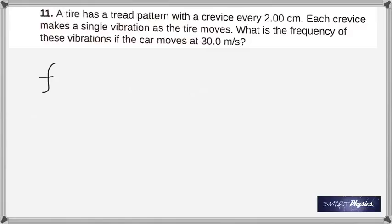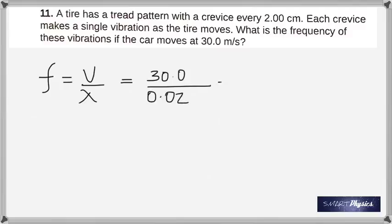That brings us to the second question. A tire has a tread pattern with a crevice every two centimeters and it makes a single vibration as the tire moves. What is the frequency of these vibrations if the car moves at 30 meters per second? Frequency is given by velocity divided by wavelength. The velocity is 30 meters per second and two centimeters is 0.02 meters. Divide to get 1500 Hertz.